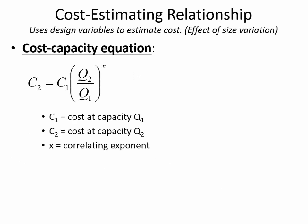Let's look at cost estimating relationships using the cost capacity equation. The cost capacity equation acknowledges the idea that when you buy something that's big, it costs more than something that's small. Q is talking about capacity. Think about a machine that is able to produce — I've used the example of a case for a mobile phone. A machine that can produce 100 per hour is going to cost less than a machine that produces 300 per hour.